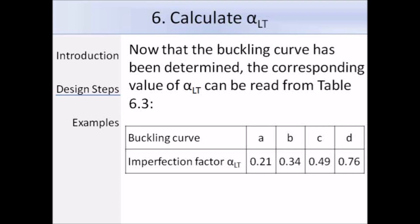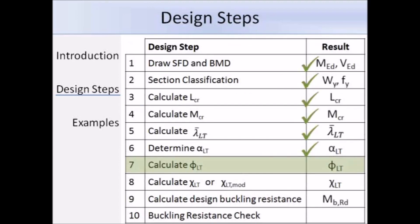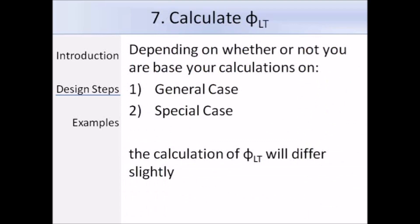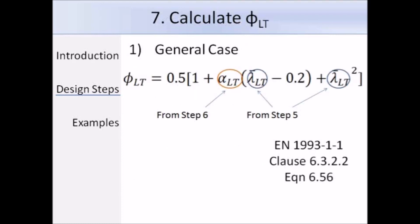That gives us alpha LT, and the next step is to calculate phi LT. If you used the general case to work out alpha LT you must continue using it, and if you used the special case you must continue with that, because just as the tables for selecting the buckling curves differ, the methods used to work out phi LT are slightly different too. Expression 6.56 is used to calculate phi LT for the general case; you have alpha LT and lambda bar LT from the previous steps, so it is simply a matter of substituting in the values.